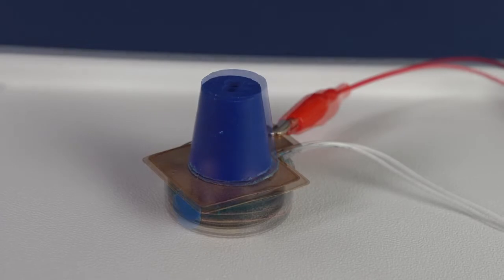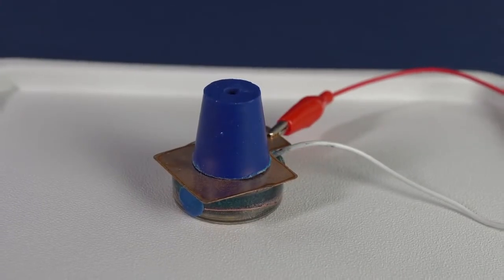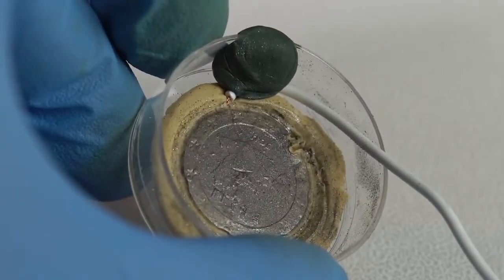Now we need to wait for 12 hours. The copper from the plate will transfer onto the graphite layer, forming a copy of a coin. So how does this happen?